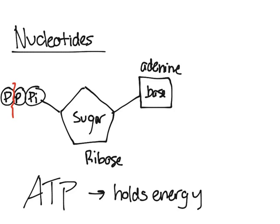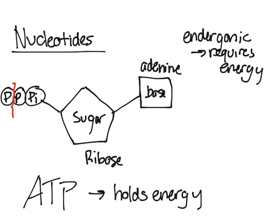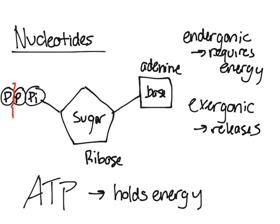The third phosphate group is put on by an endergonic process, which means that it requires energy. Exergonic — you could think of it as exiting, giving off energy. Because the bond between the second and third phosphate is really unstable, the bond only briefly stores energy.